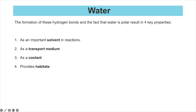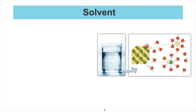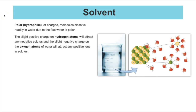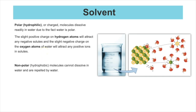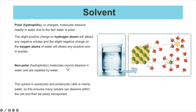There are four important properties of water to know: as a solvent, as a transport medium, as a coolant, and for providing habitats. As a solvent, because water is polar it can interact with other polar molecules. The slight positive charge on hydrogen atoms attracts negative solutes, and the slight negative charge on oxygen attracts positive ions. This is why sodium chloride dissolves so readily in water. Non-polar or hydrophobic molecules such as lipids cannot dissolve in water and are repelled.